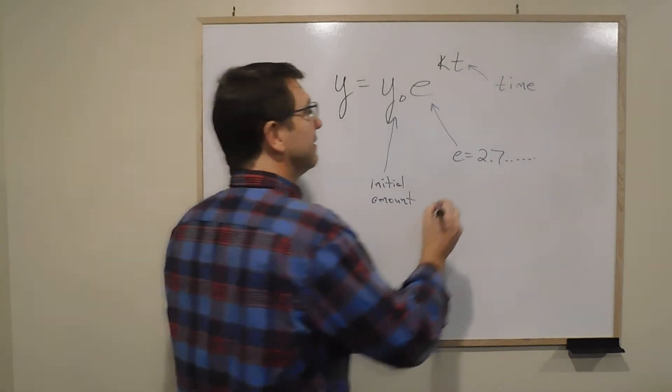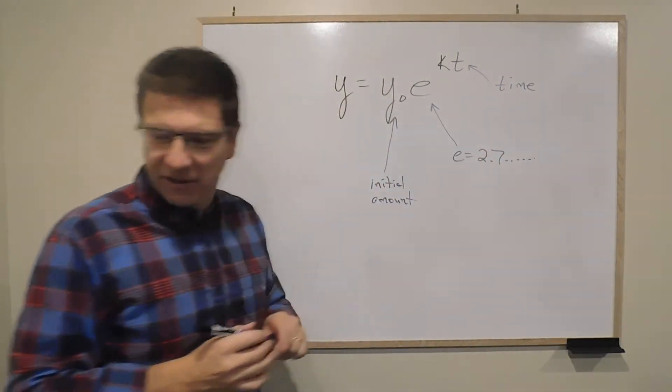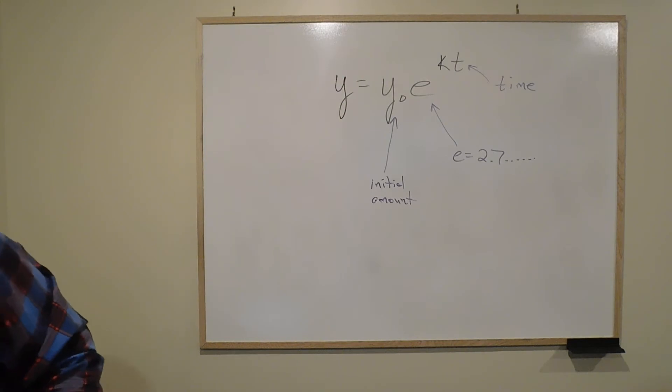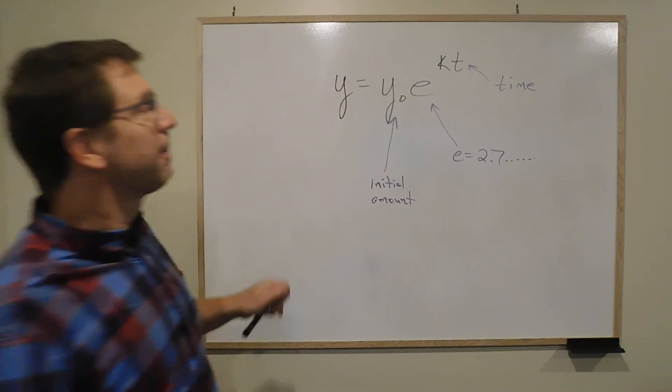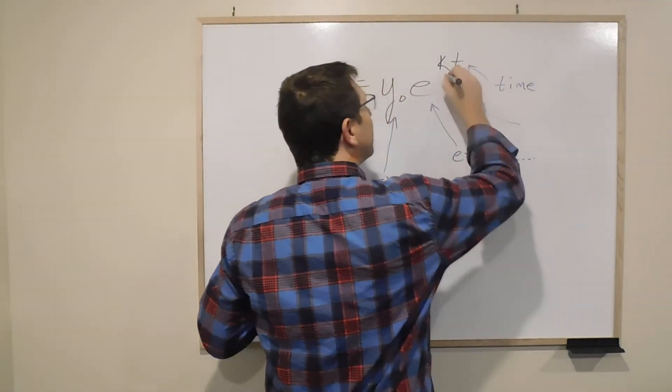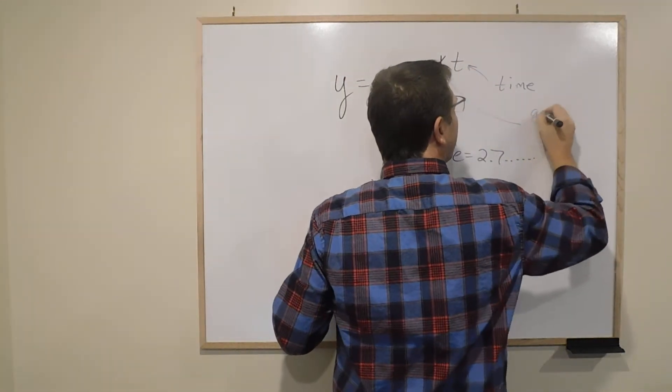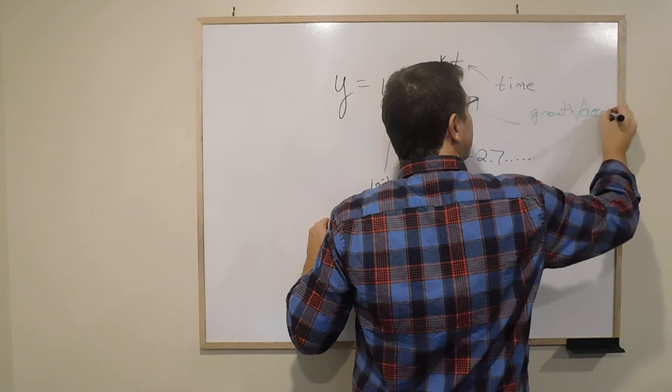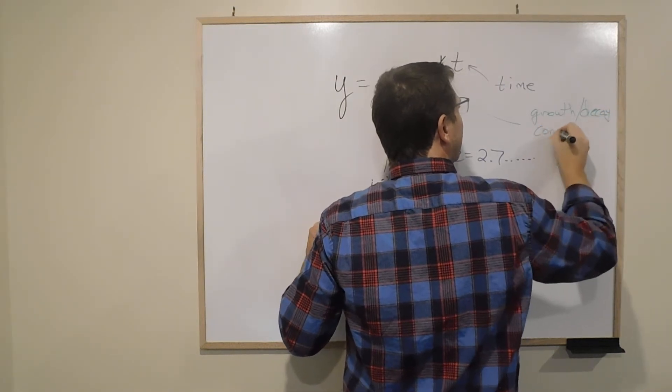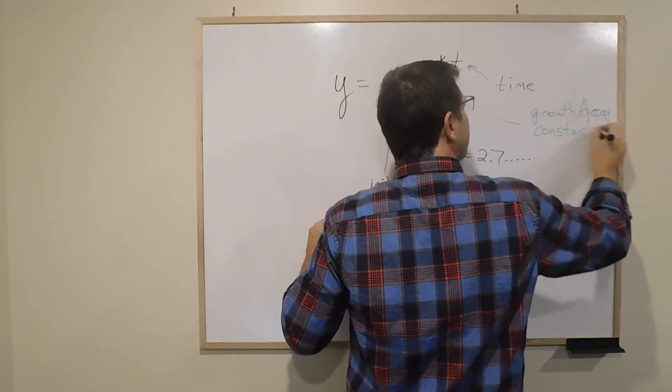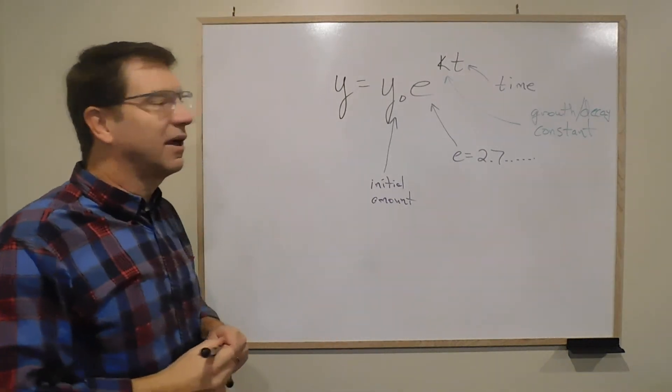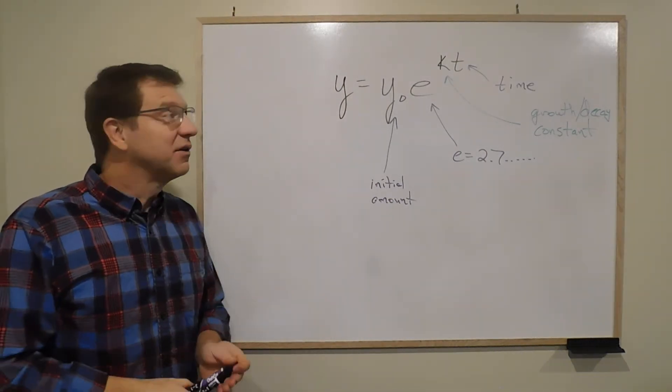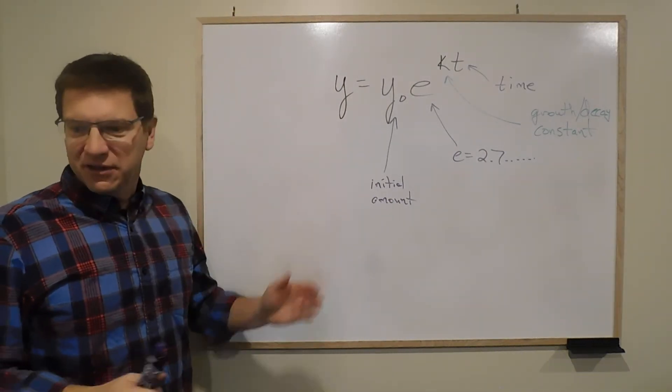And K, and let's use a different color for K actually, we'll use green. K is your growth or decay constant. Your growth or decay constant. So it's a number that you're given. Again, this kind of looks crazy.